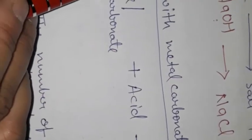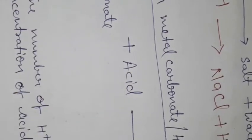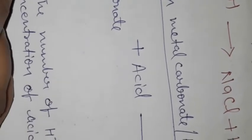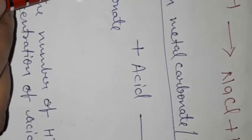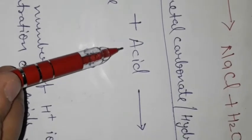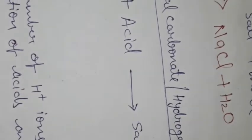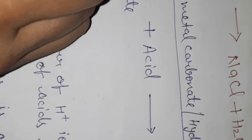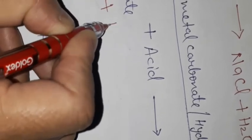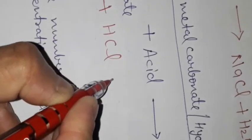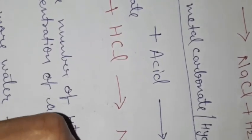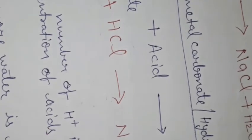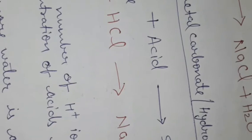The fourth property is acid reacting with metal carbonates and hydrogen carbonates. When metal carbonate or metal hydrogen carbonate reacts with acid, it forms salt, water and carbon dioxide. For example, Na₂CO₃ reacting with HCl forms NaCl + H₂O + CO₂.